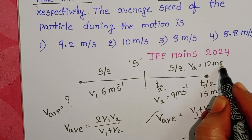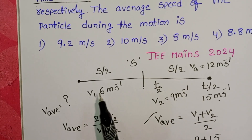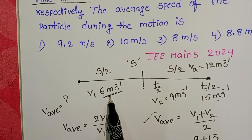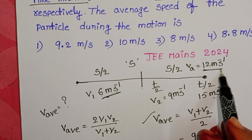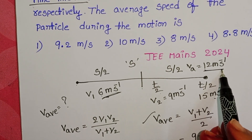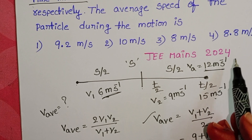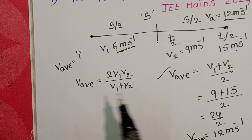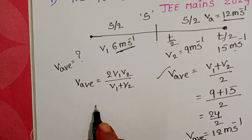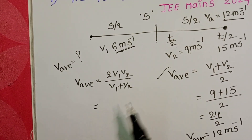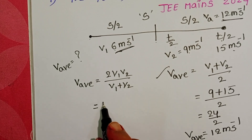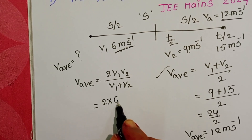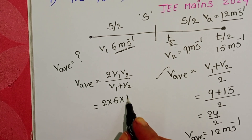The first half of the distance has a speed of 6 meters per second, and the next half has a speed of 12 meters per second. Now to find the average speed for the total journey using: 2V1V2 / (V1 + V2), where V1 = 6 and V2 = 12, giving 2 × 6 × 12 / (6 + 12).